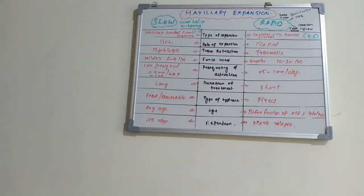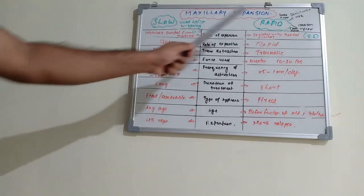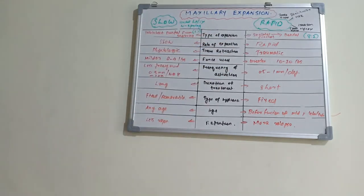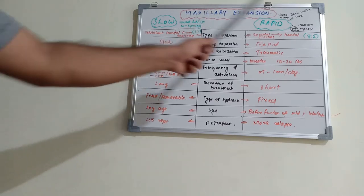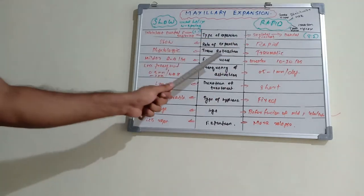The next parameter is the rate of expansion. As the name suggests, the rate is slow in slow expansion and very rapid in rapid maxillary expansion. Regarding tissue retraction: since slow expansion applies gradual force, tissue retraction is more physiologic in nature. In rapid expansion, however, it is traumatic to the tissues because we are applying very rapid, greater forces.